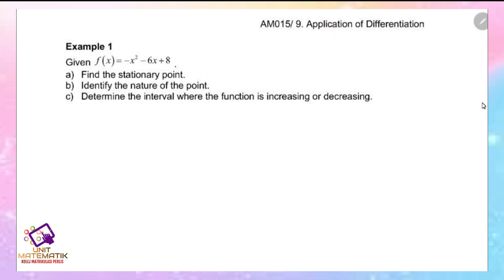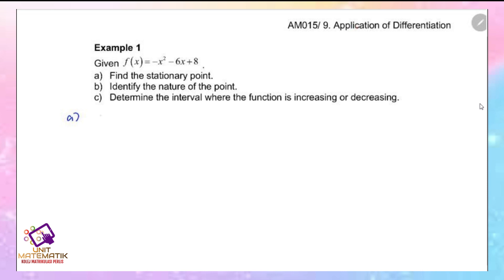Example 1: Given f(x) equals negative x squared minus 6x plus 8, find the stationary point, identify the nature of the point, and determine the interval where the function is increasing or decreasing. For part (a), differentiate the function: f prime equals negative 2x minus 6. Equate the derivative with 0 to find x.